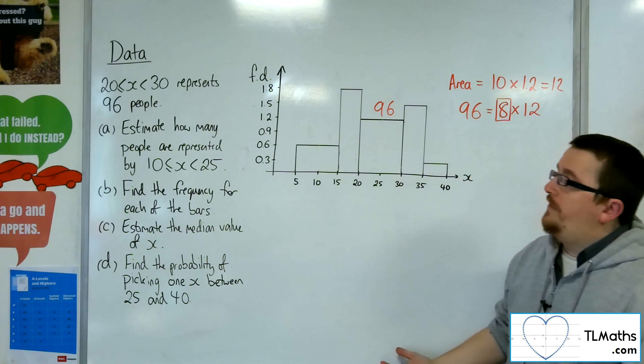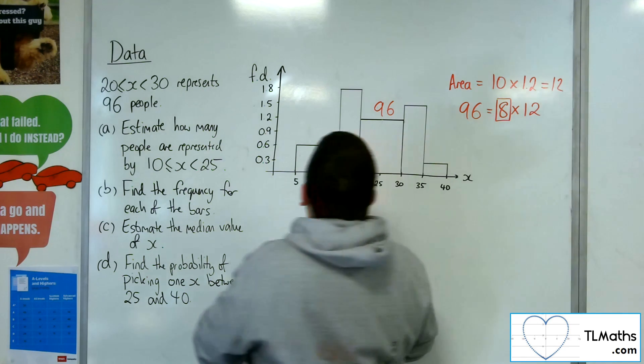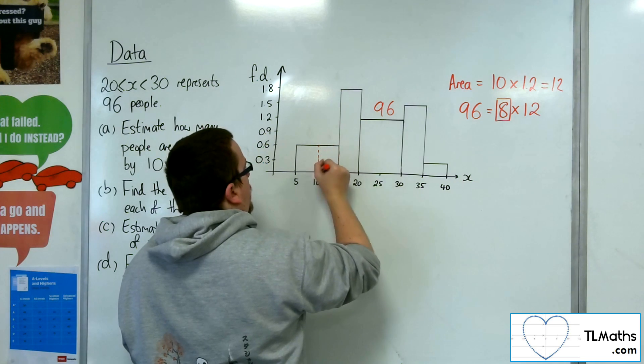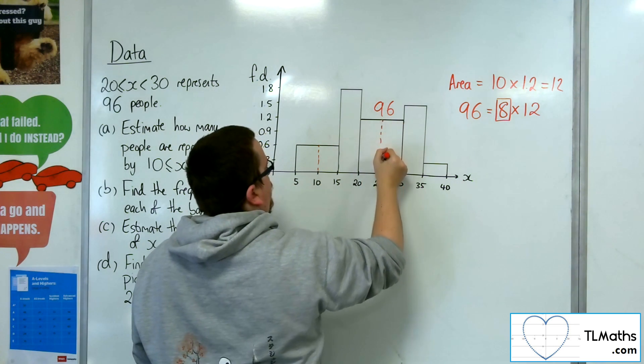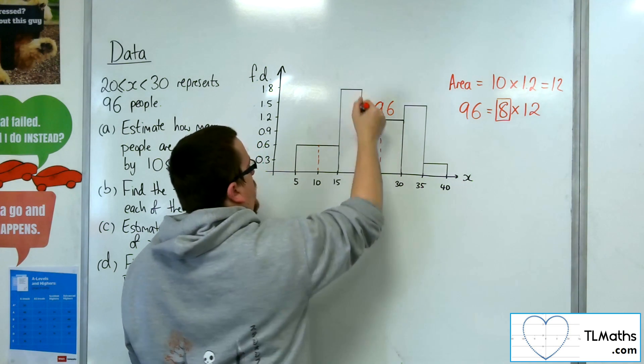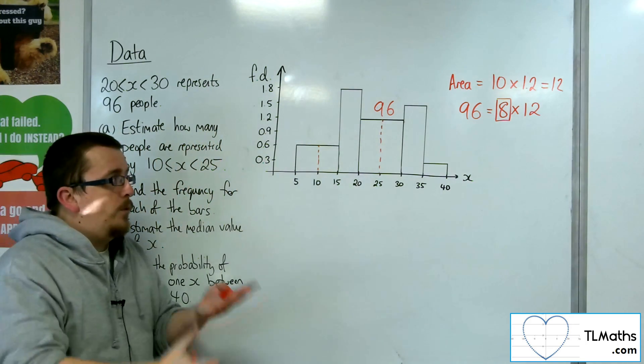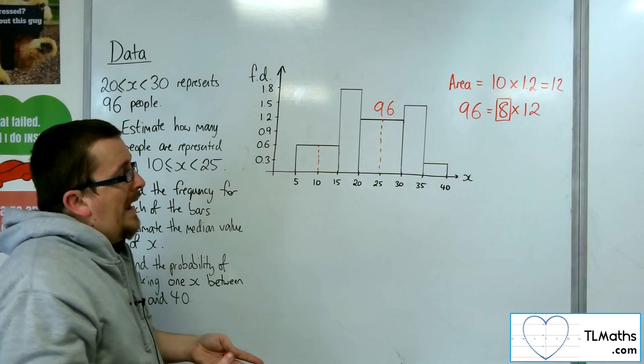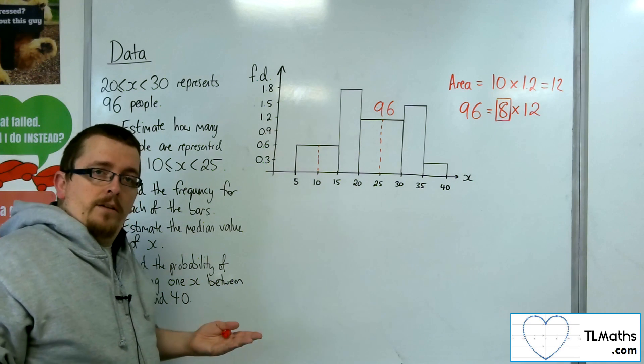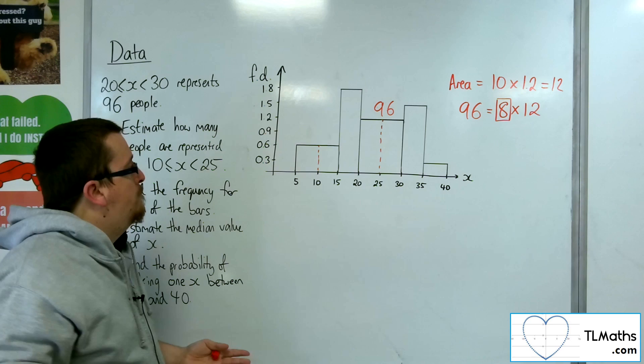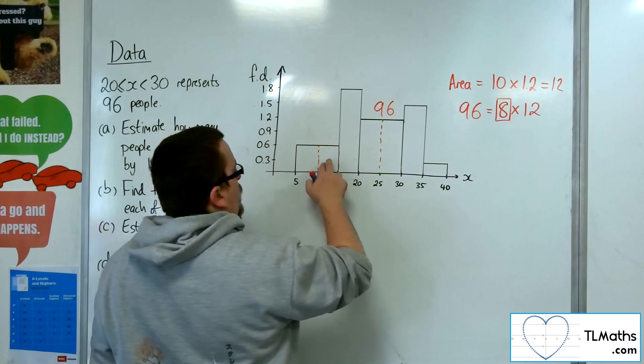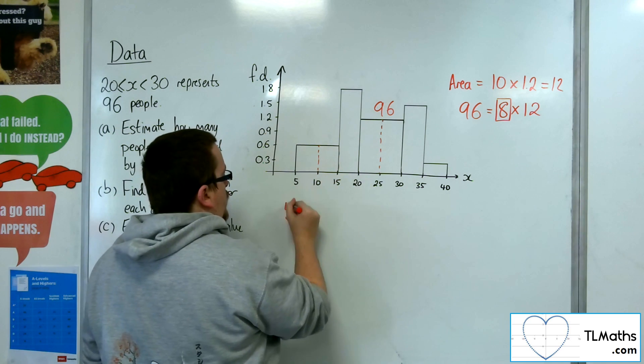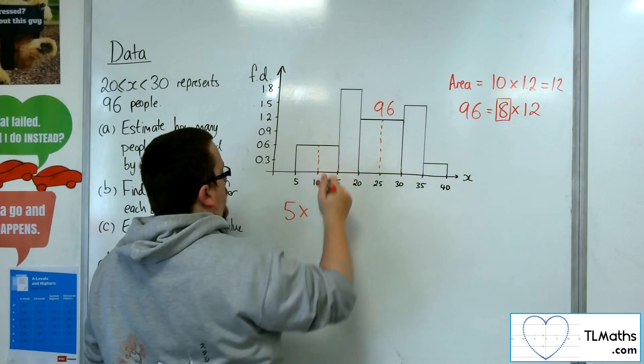Estimate how many people are represented by 10 to 25. So I'm looking at this region, all that region there. What I want to do is work out the area of that region and then multiply it by 8, and that will give me the frequency. So I've got this little block here, which will be 5 times 0.6,